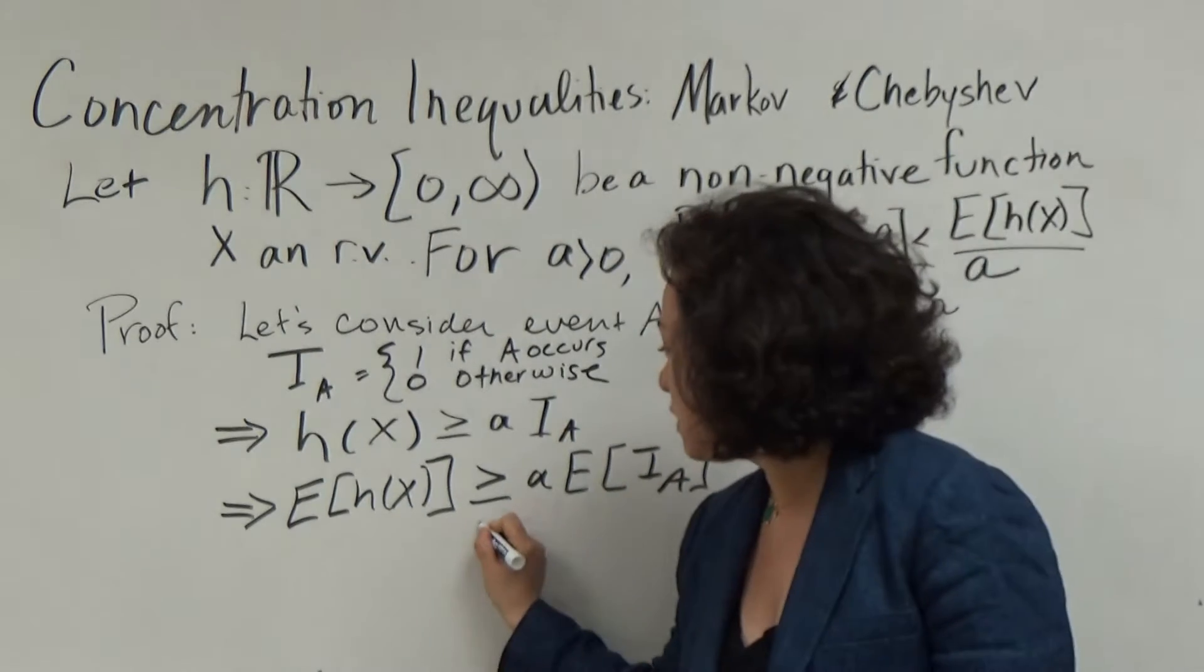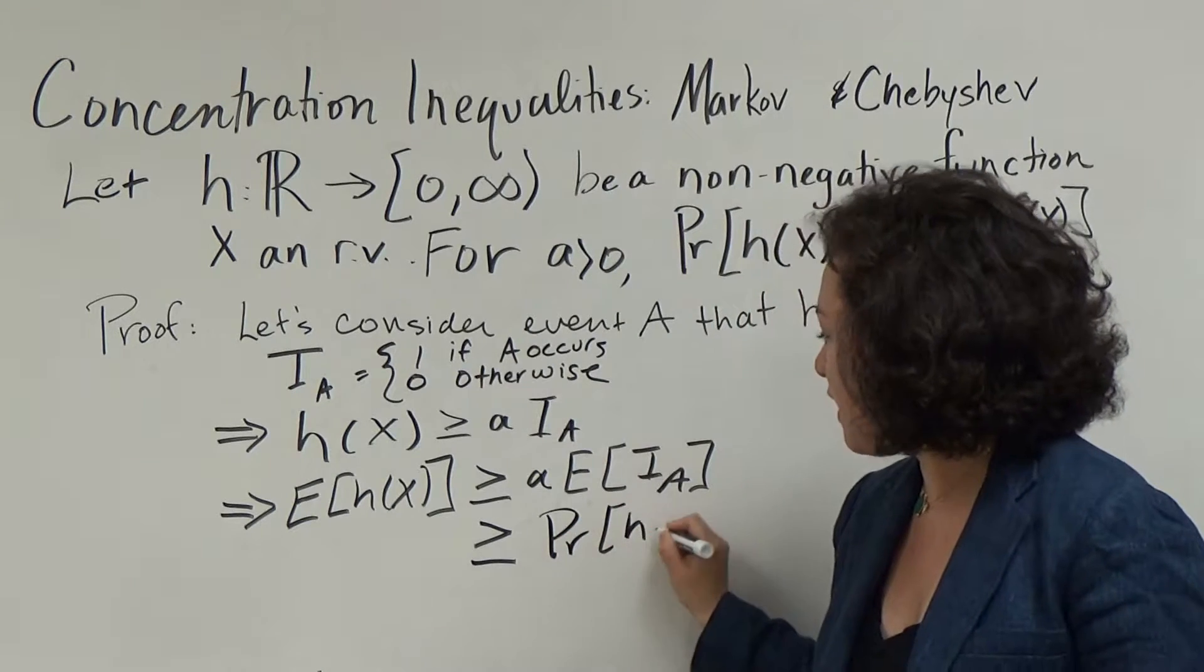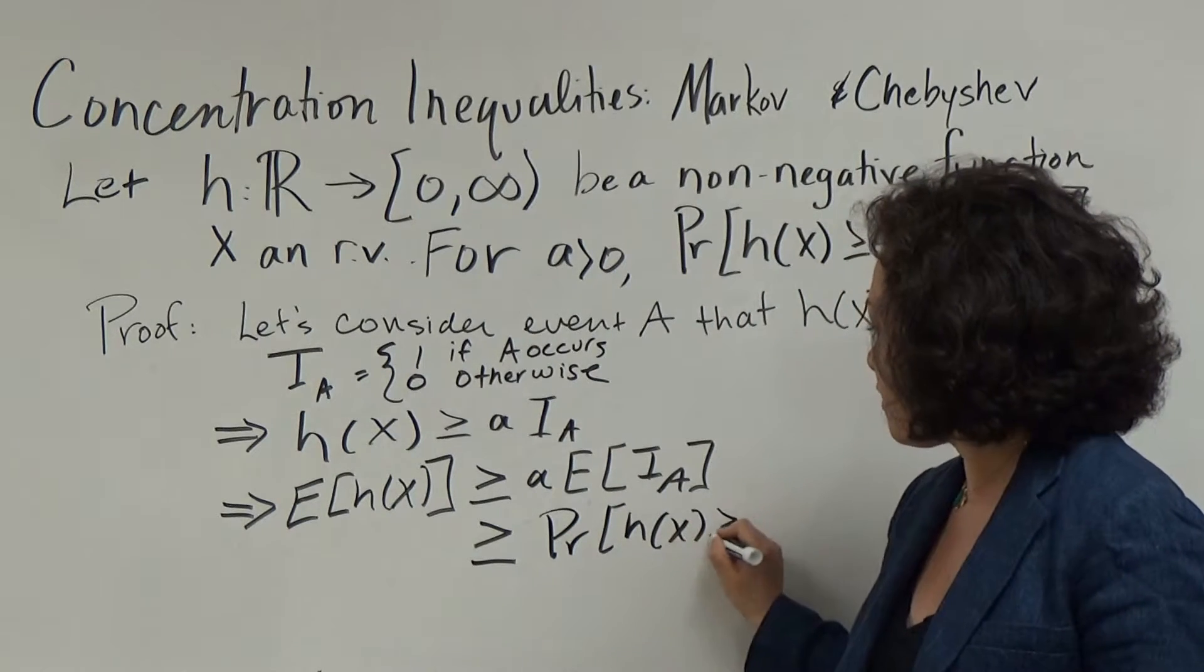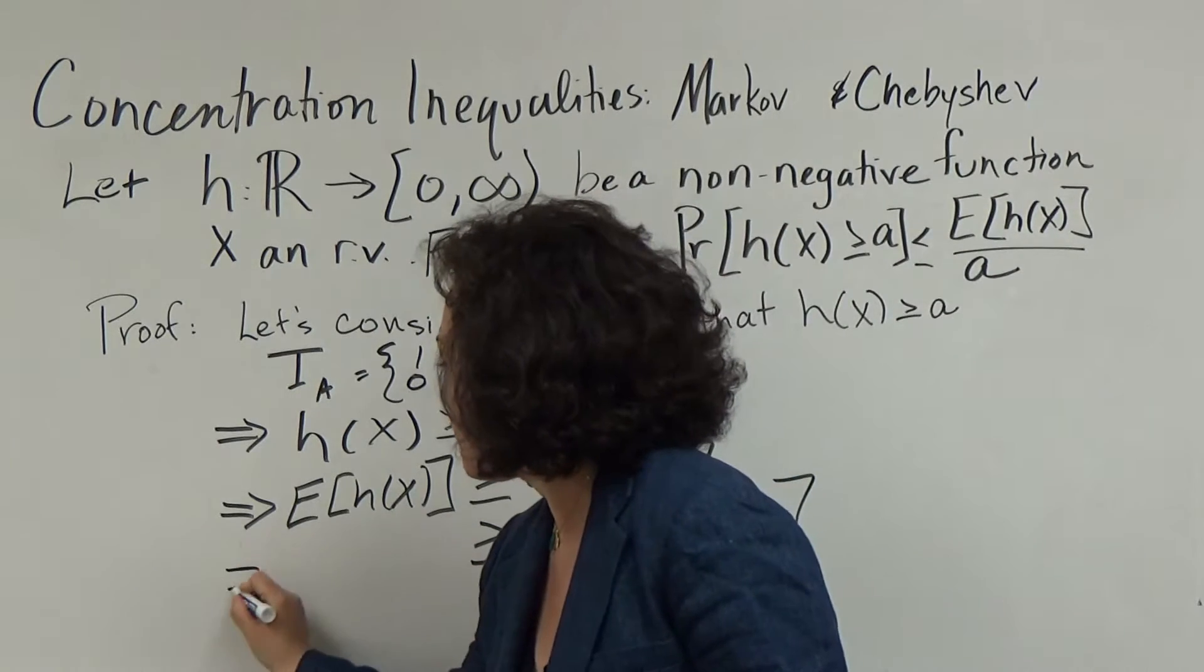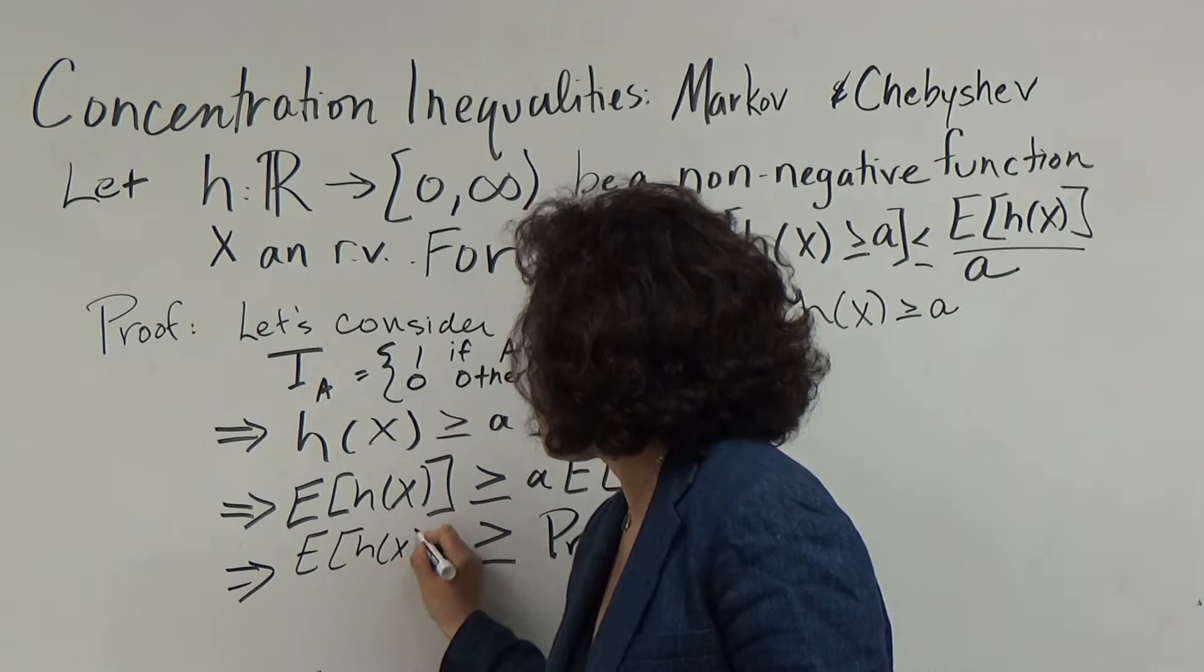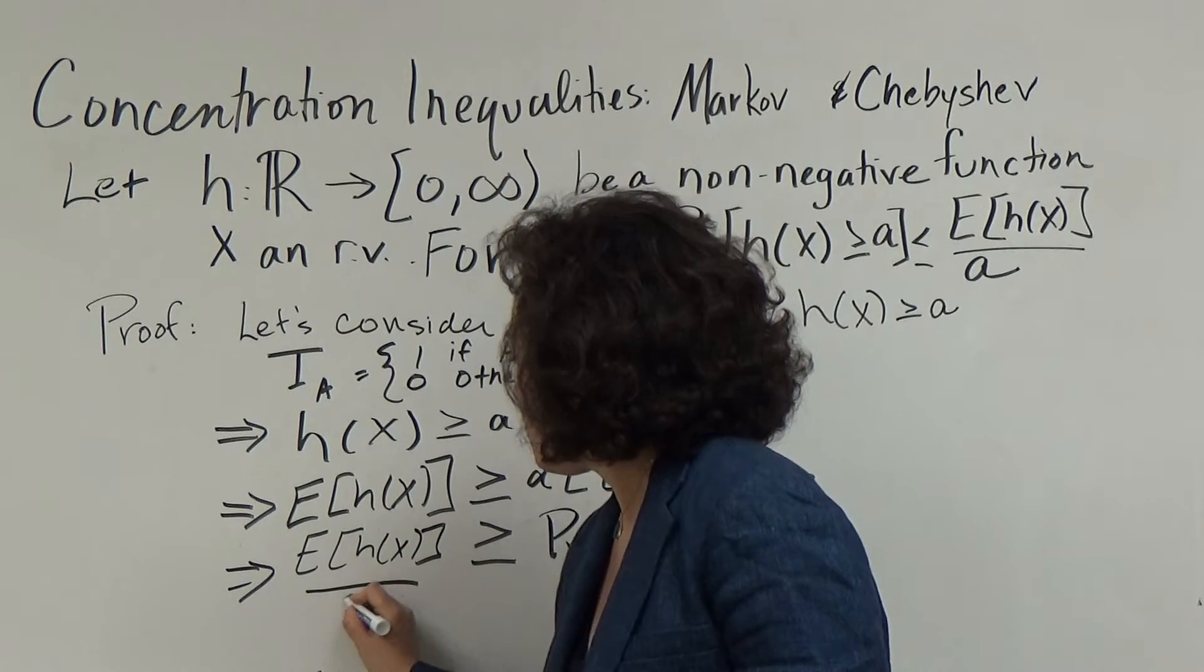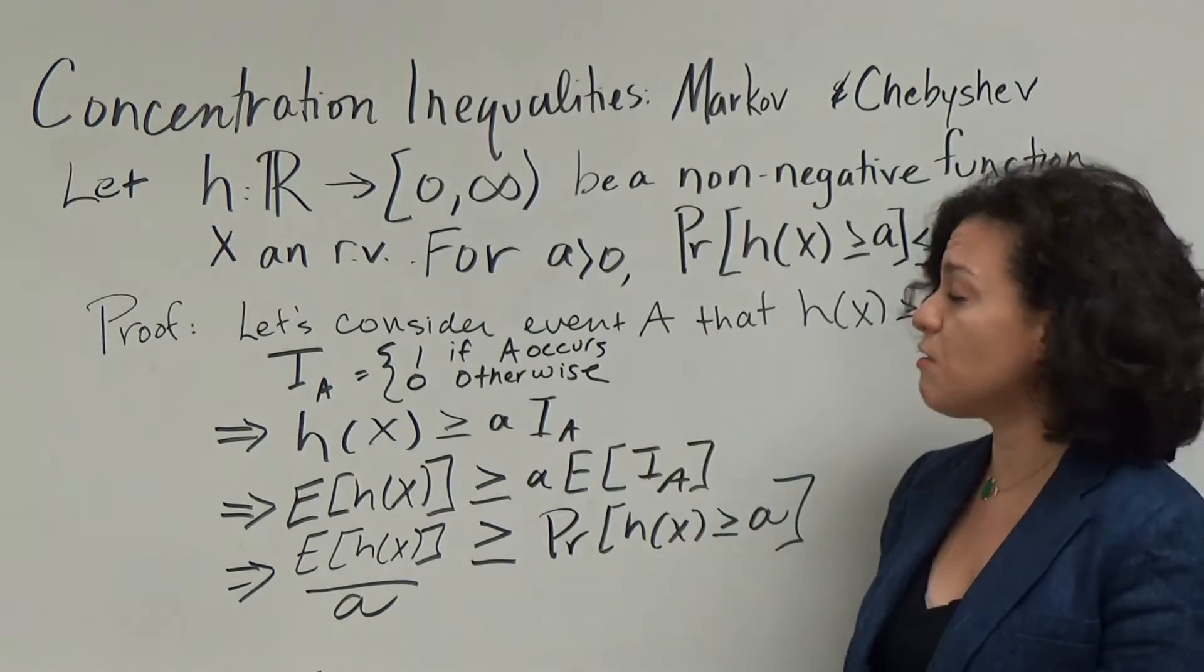Okay, so now we can see that the probability of h(x) being greater than or equal to a is going to be bounded above by the expectation of h(x) divided by a. And this is fine because we assume that a was greater than 0.